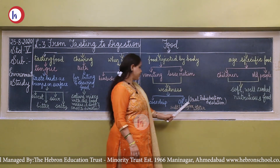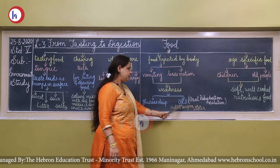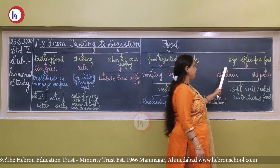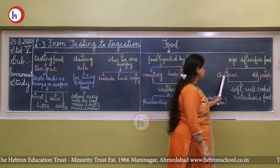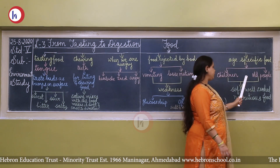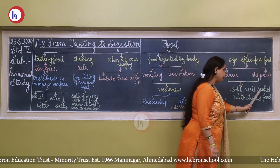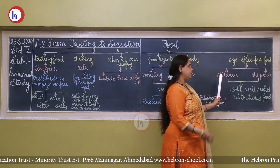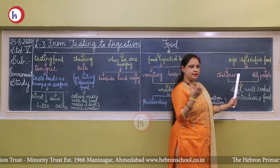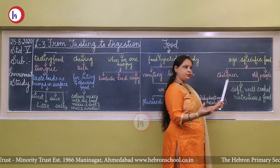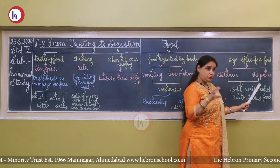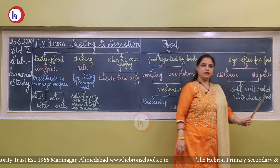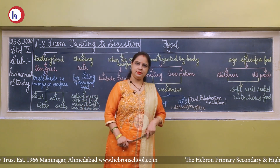The full form of ORS is Oral Rehydration Solution. It comes in powder form and is a mixture of salt and sugar in water. Age-specific food means food suited to children and elderly people — they need soft, well-cooked food that is nutritious and easy to eat. I hope children that you have understood the whole lesson. Thank you.